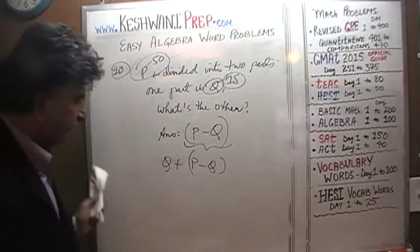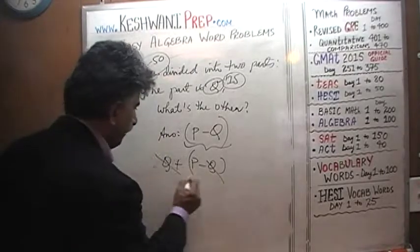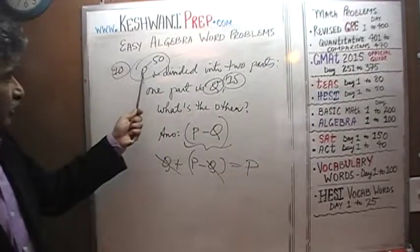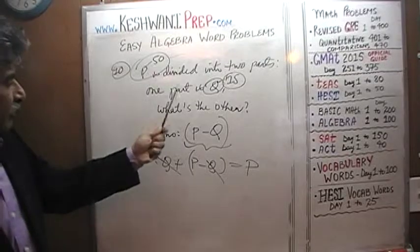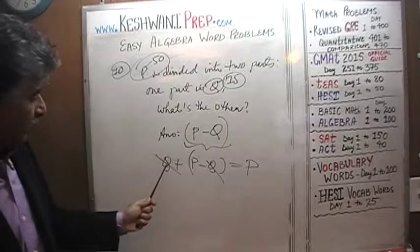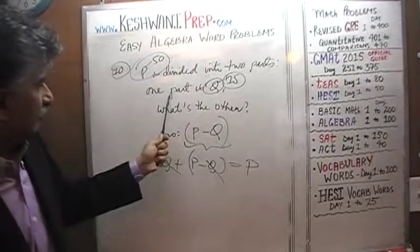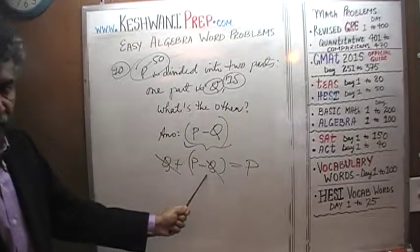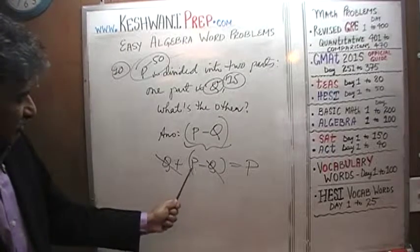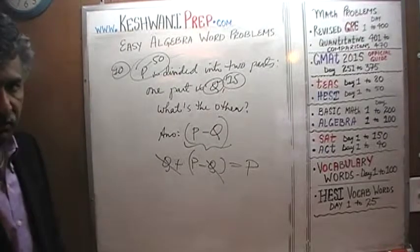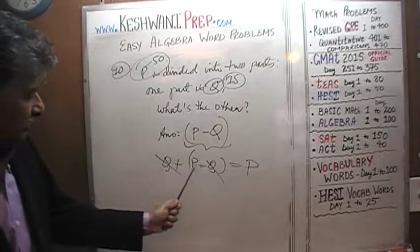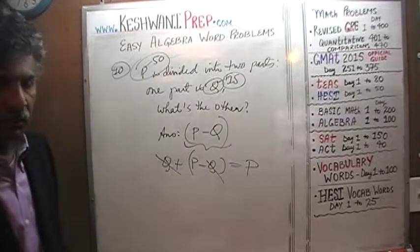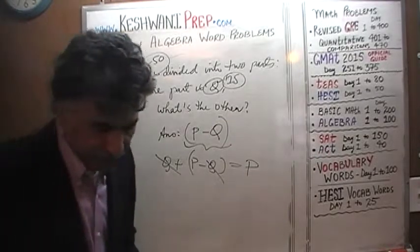Because when we add the two parts, the Q cancels out and we get P. Because that's what P was — P was divided into two parts, and one part we were told was Q. What is the other part? The other part must be P minus Q, because Q plus P minus Q gives us P, the grand total. Number 10.